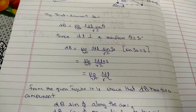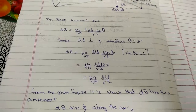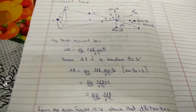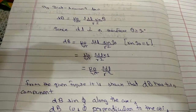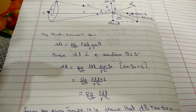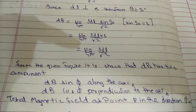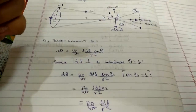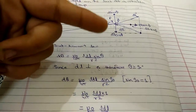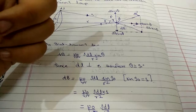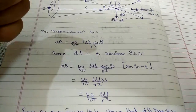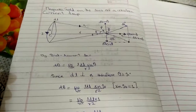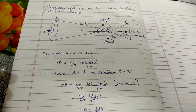From the given figure, it is shown that dB has two components: dB cos phi and dB sin phi. dB sin phi is along the axis and dB cos phi is perpendicular to the axis. We can clearly see from the diagram that the dB cos phi components are in opposite directions, so they will cancel each other. Therefore, dB sin phi has to be resolved.